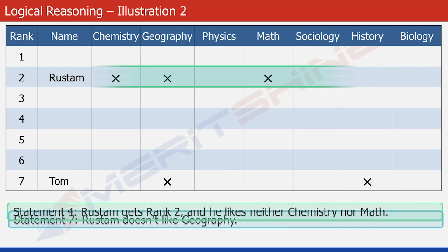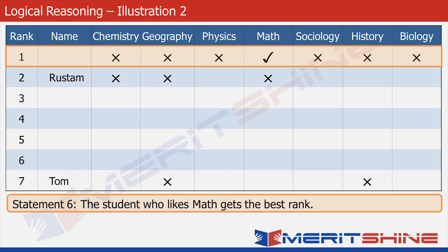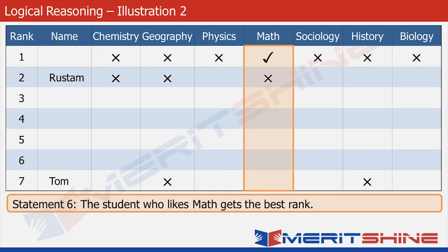Moving forward, let's look at statement six, which states that the person who likes math gets the best rank. Look at the highlighted row — it belongs to rank one. We need to put a check against math and a cross against each of the rest six subjects in this row. Now concentrate on the highlighted column — it belongs to math. Since a subject can be liked by just one student and math is liked by the student who got rank one, we can infer that it cannot be liked by any other student, so the cells corresponding to math should be crossed against all the other ranks.